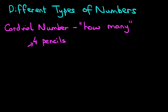What if we had seven cats? Again, that is a cardinal number. It's telling you how many cats there are. So that is cardinal numbers.